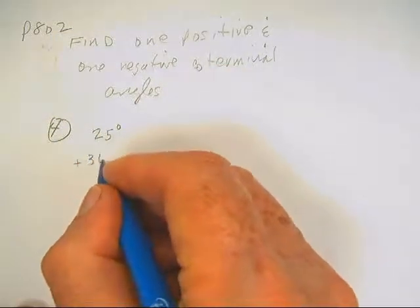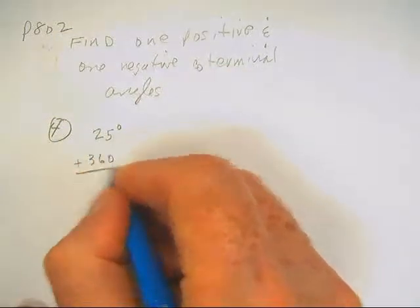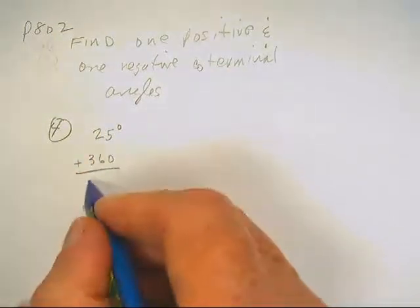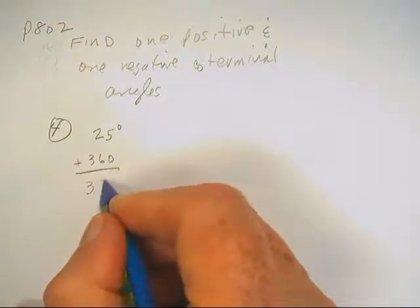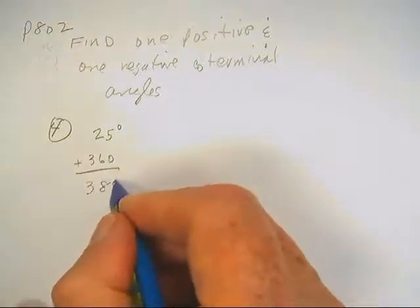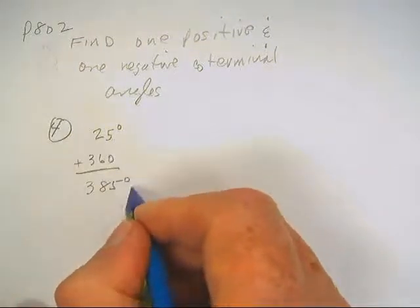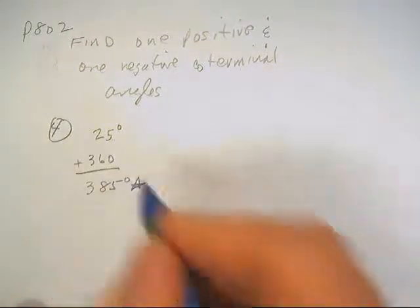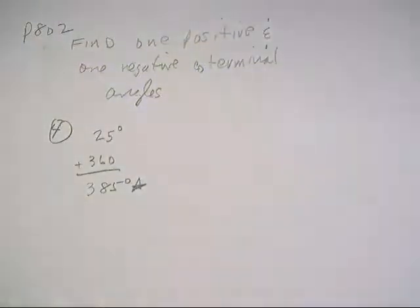To get the positive one, we just want to add 360 — just go around the circle one more time.